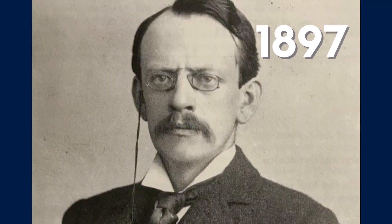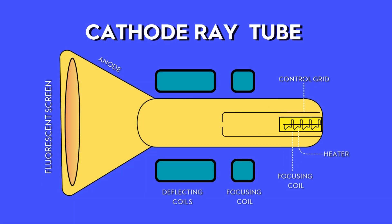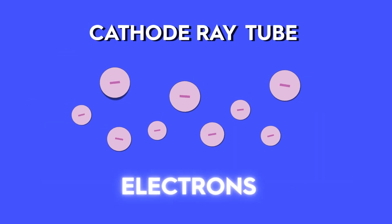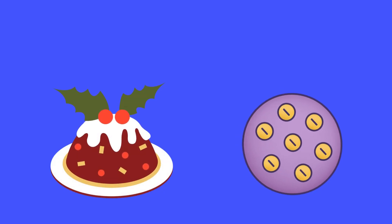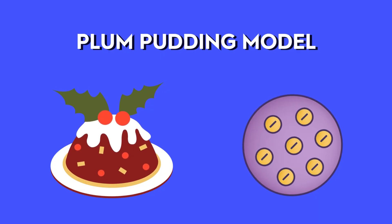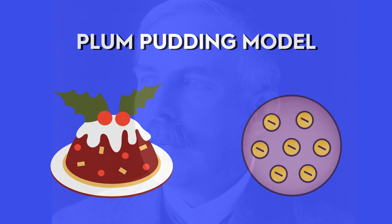In 1897, J.J. Thomson fired cathode rays and observed them deflect. Clear evidence of tiny, negatively charged particles he would name electrons. To keep atoms overall neutral, Thomson imagines electrons embedded in a diffuse positive pudding, the famous plum pudding model. This model sparked debate and inspired more experiments to test how accurate it really was.